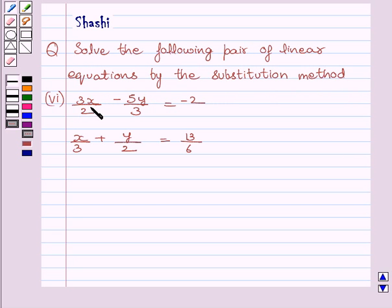Equations are, 3x upon 2 minus 5y upon 3 is equal to minus 2 and x upon 3 plus y upon 2 is equal to 13 upon 6. Let us start with the solution now.